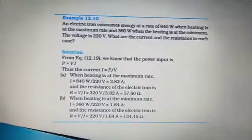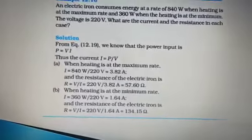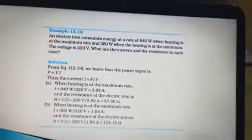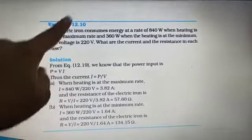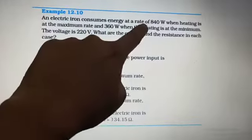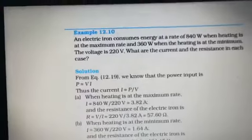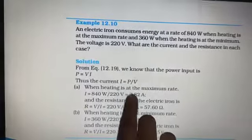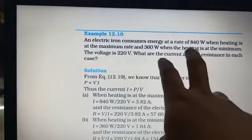Transposing V on the other side, we get I equals P divided by V. Using this formula, we say that the maximum current in case 1, when P is 840 and voltage is 220, 840 divided by 220, the current is 3.82 amperes.